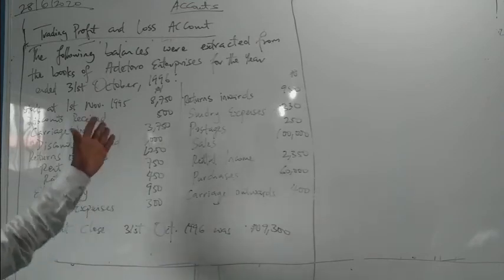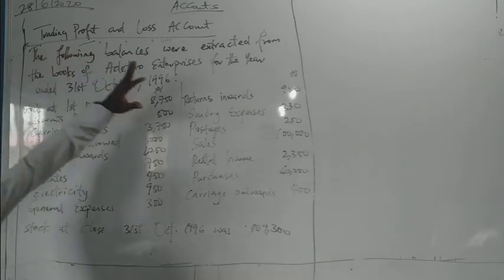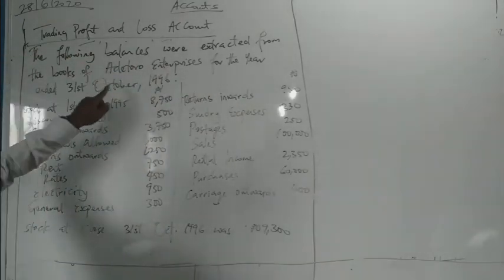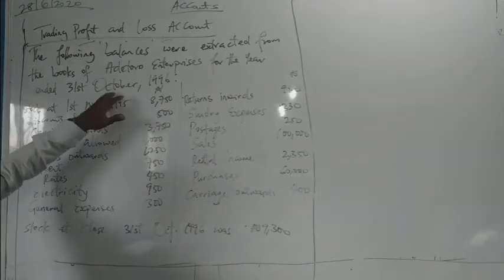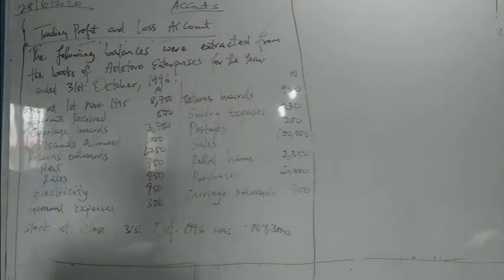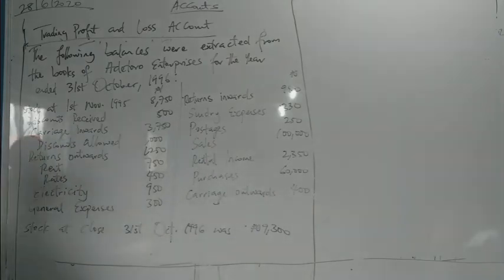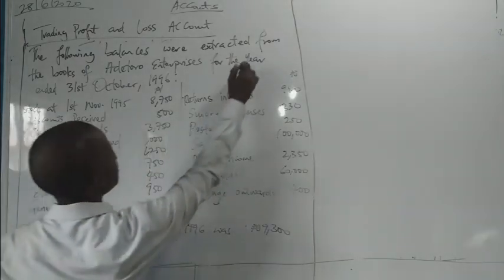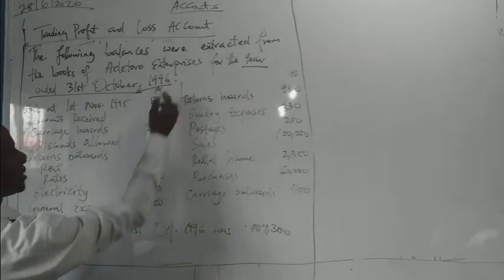Here is an illustration on a trading profit and loss account. The following balances were extracted from the books of Aditoru Enterprises for the year ended 31st December 1996. Now let's look at these figures.